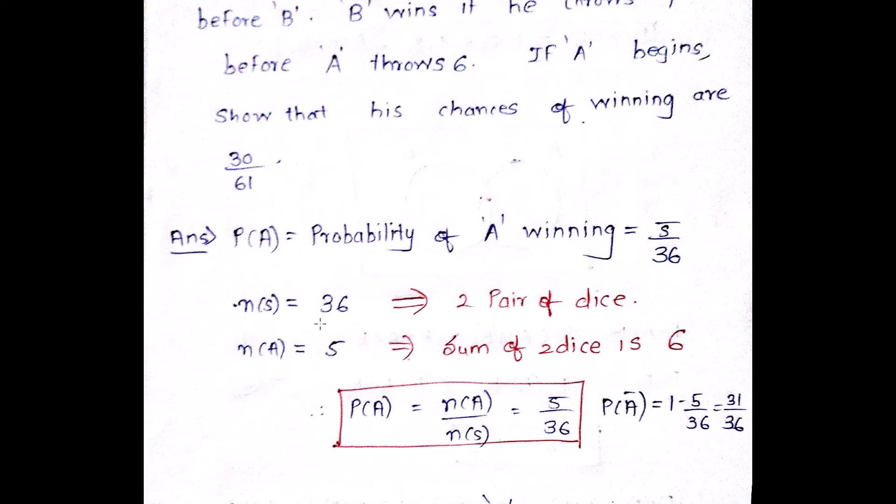So in a pair of dice, if you see, there are total 36 sample space. Out of which, the sixth value will come when N of A is equal to 5. So what I want to say is that if there are two dice, and if A has to win, then in that case, the sum of two dice is equal to 6. So the number of possibilities in a pair of dice is 5 for them. And the total number of possibilities for two dice is 36.